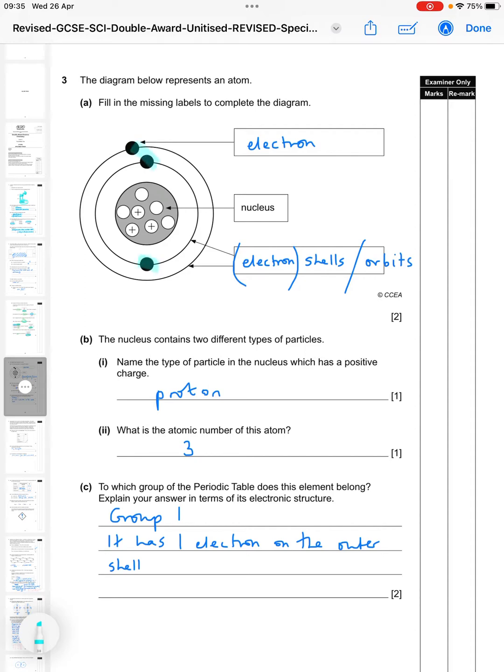Next question is about atomic structure. Fill in the missing labels to complete the diagram. So we have these black dots around the outside on these lines, and we've got the middle here with white circles, some of them with pluses in them - it's the nucleus. So around the outside here we have electrons, and then those little circles that the electrons are sitting on are the electron shells, or you could say orbits. That would also be accepted.